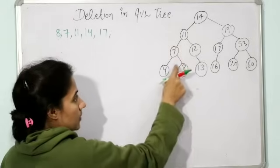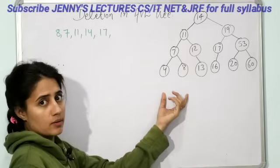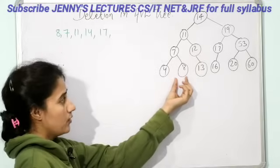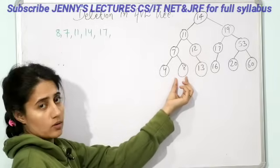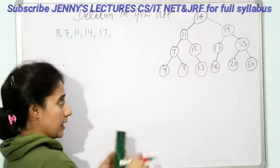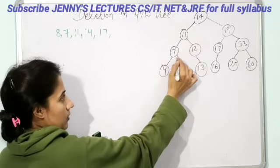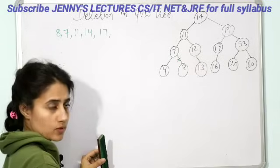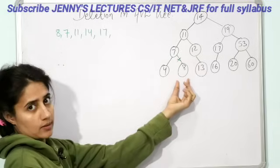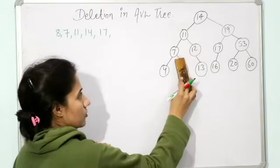Now how to delete 8. Deletion would be same as in BST. This node is having no child — it is a leaf node. So you can directly delete this node. After deletion of 8, the tree would be something like this.